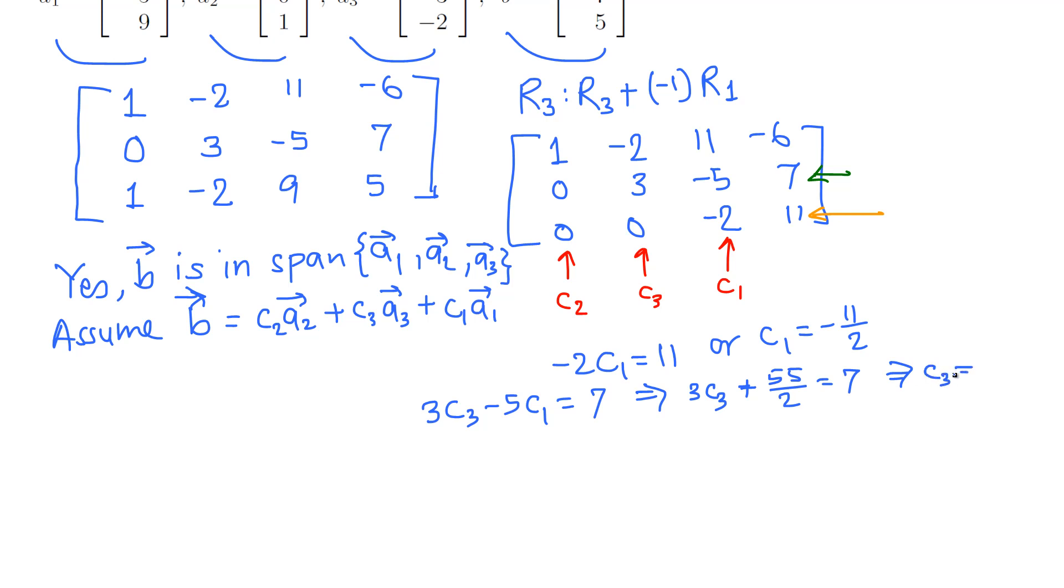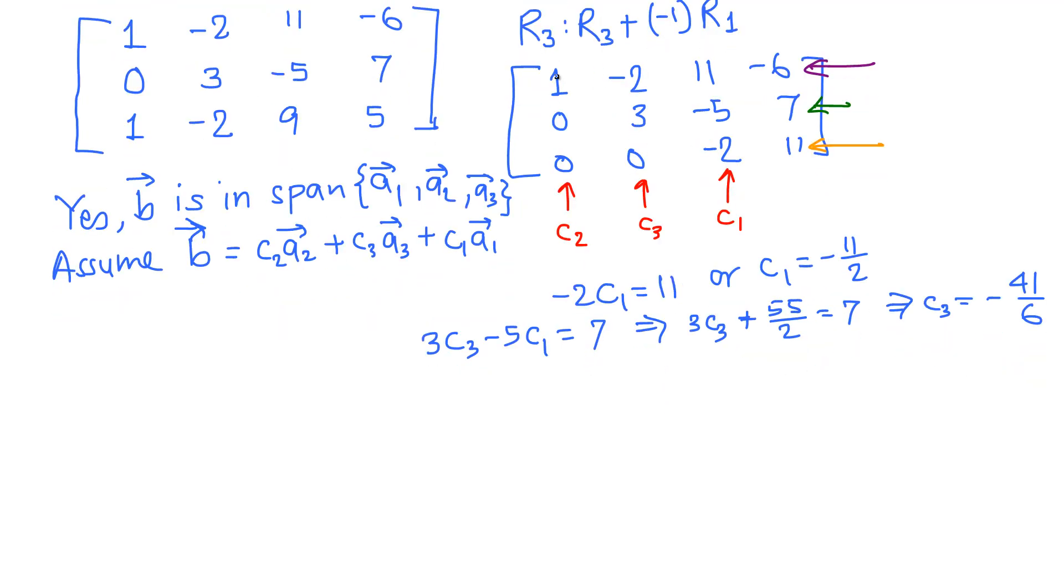Now finally we need to use the first row. That is 1*c2 - 2*c3 + 11*c1 = -6. c2, we are trying to determine, minus 2 times c3.